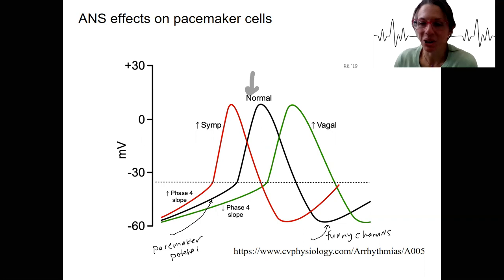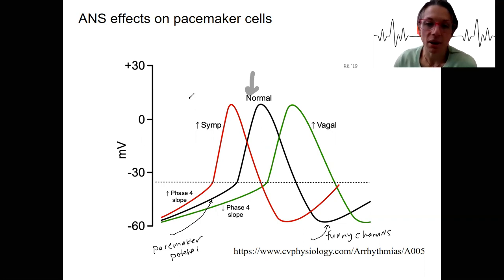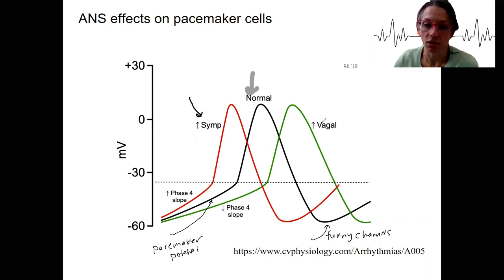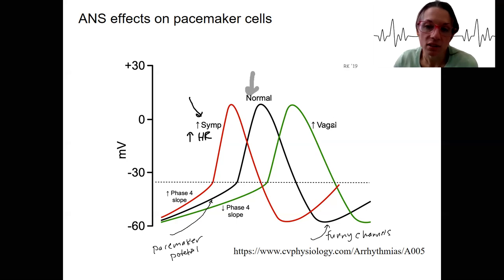The autonomic nervous system can also affect this. The sympathetic nervous system, as you already know, increases heart rate. The vagus nervous system decreases heart rate. Increased sympathetic nervous system activity is going to increase heart rate; increased vagal stimulation is going to decrease heart rate.